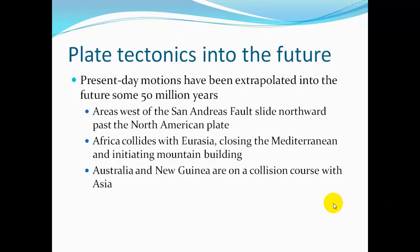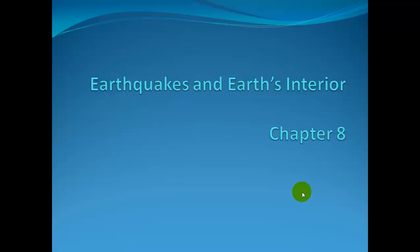Looking at plate tectonics into the future: present-day motions have been extrapolated some 50 million years ahead. Areas west of the San Andreas Fault will slide northward past the North American plate all the way to Alaska — so part of California is heading north, not falling into the ocean. Africa will collide with Eurasia, closing the Mediterranean and initiating more mountain building. Australia and New Guinea are on a collision course with Asia. That's the end of this chapter.